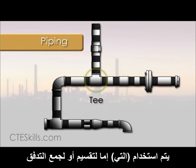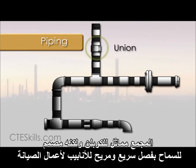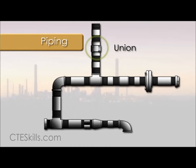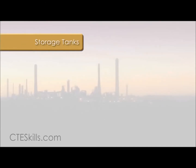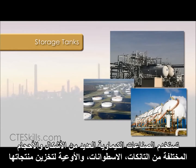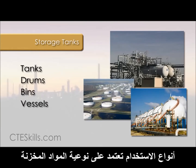A tee is used to either split or combine flow. The union, similar to a coupling, is designed to allow quick and convenient disconnection of pipes for maintenance or fixture replacement. The chemical processing industry uses many different shapes and sizes of tanks, drums, bins, and vessels to store their products. The types used are dependent on the material stored.